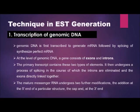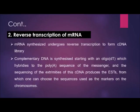The first step in EST generation is the transcription of genomic DNA. The genomic DNA from an organism is transcribed to generate mRNA, followed by splicing to synthesize mature mRNA. The primary transcript contains two elements — exons and introns. During splicing, introns are eliminated and exons are directly joined together. This produces mature mRNA that undergoes two more modifications: addition of a CAP at the 5' end and a poly-A tail at the 3' end.